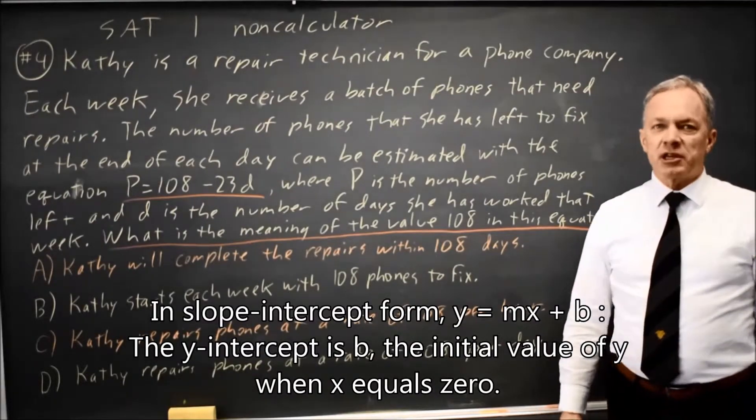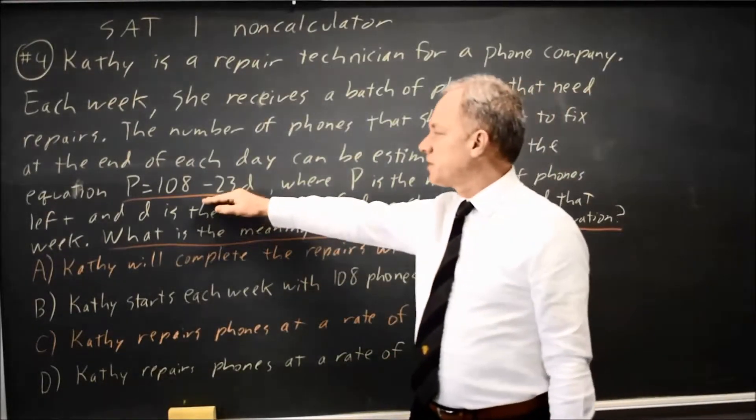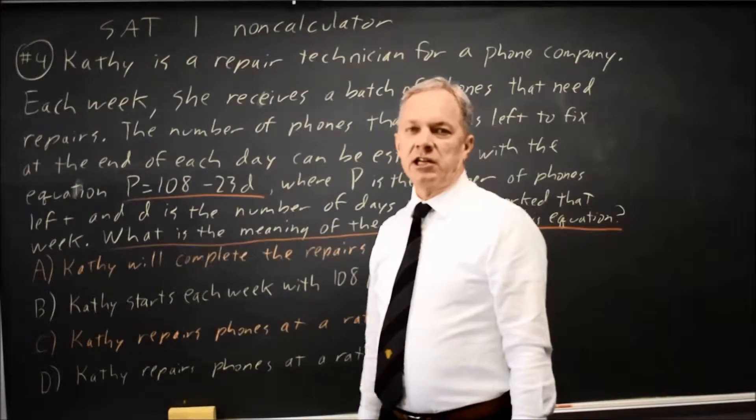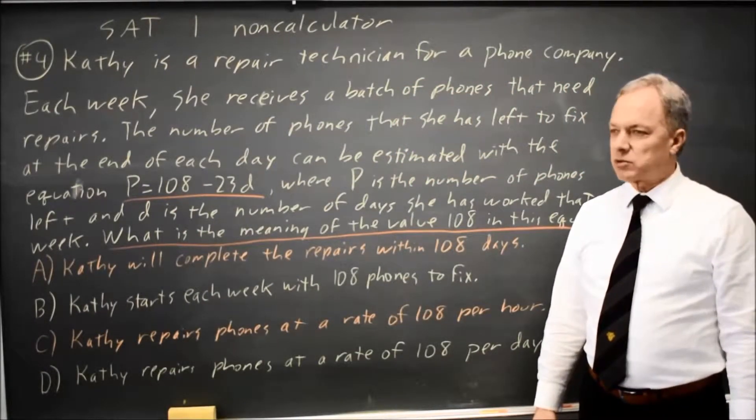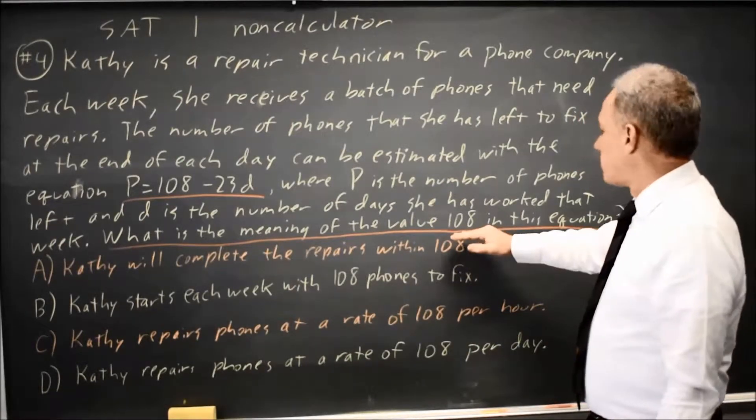The College Board will typically give you two questions per SAT asking for the meaning of the slope, in this case negative 23, or the intercept, in this case 108, for a linear equation in the context of a real-world problem. So in this case we're trying to interpret 108.